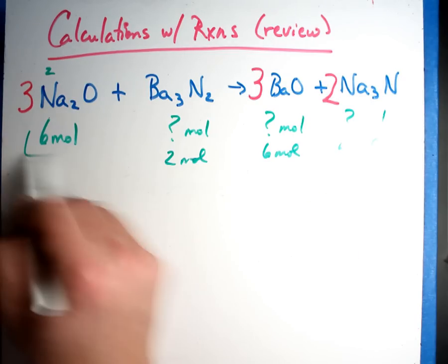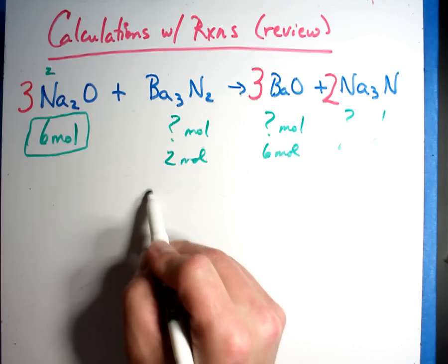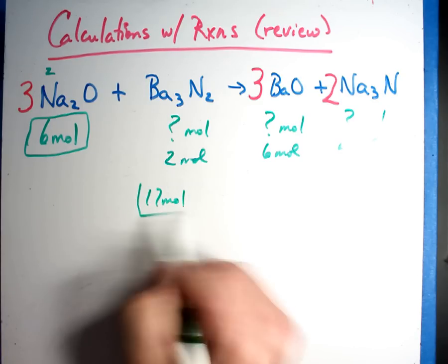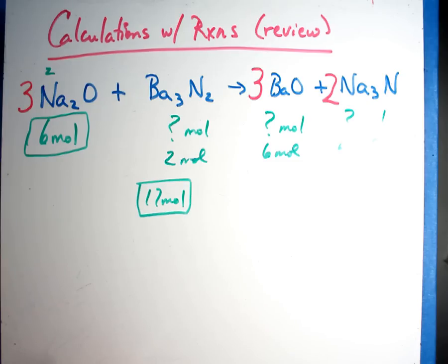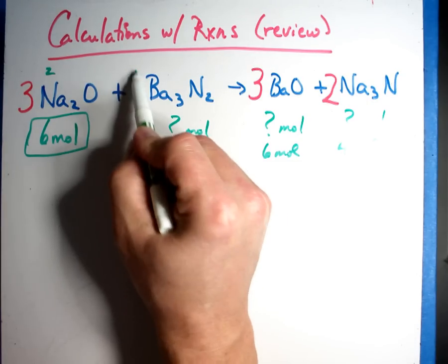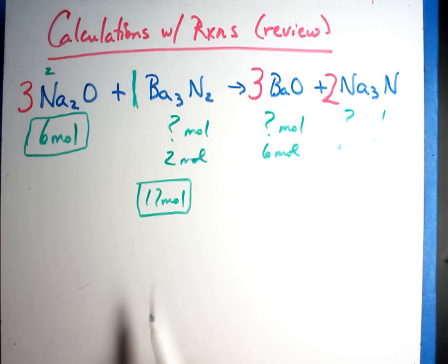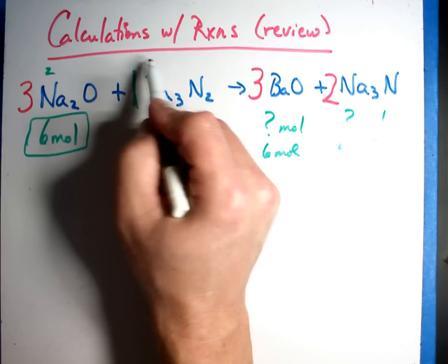So if I started here, I'll put a square around that. If I started here at 17 moles, well, this is a one. I know it's a one, it's understood to be a one. 17 divided by one is 17.